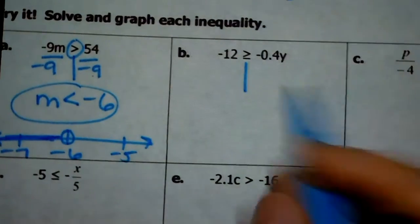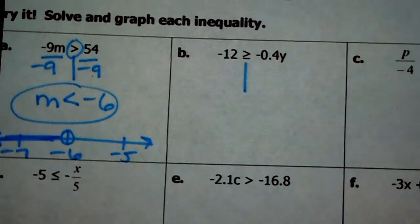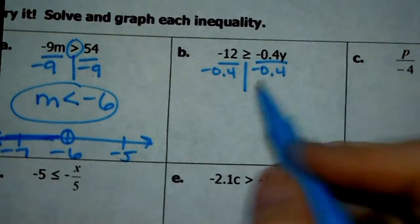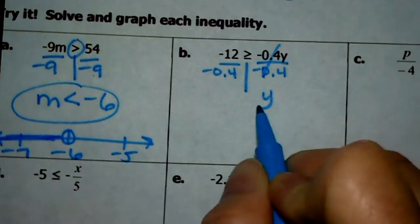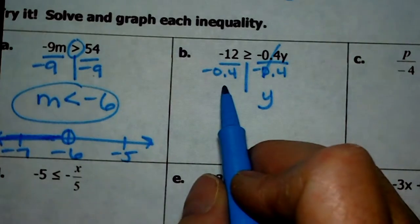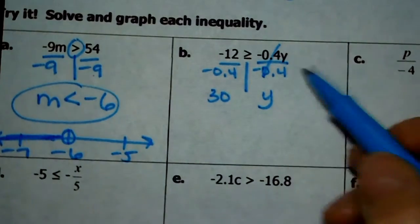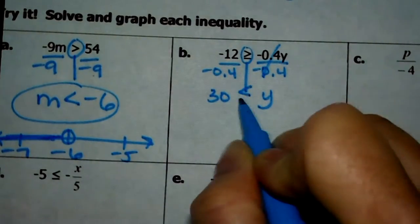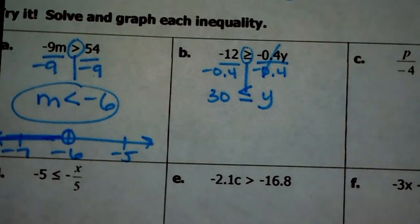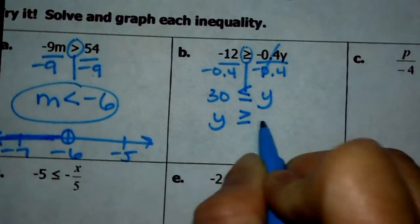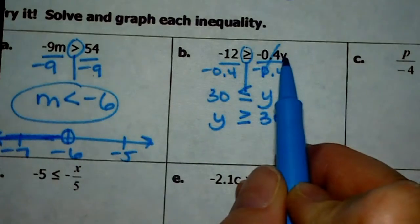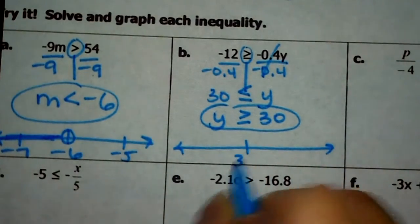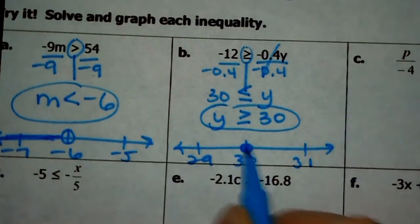The next one: I have negative 4 tenths being multiplied by y. In order to get that by itself, we have to divide by negative 4 tenths — that cancels out and I'm left with y. If you take negative 12 and divide it by negative 4 tenths, you get 30. Because you divided by a negative, I need to flip this sign. So instead of it pointing at the y, I'm going to make it greater than. I'll rewrite this as y is greater than or equal to 30. For the graph, I put 30 in the center with 29 and 31 — greater than or equal to means closed and shaded to the right.